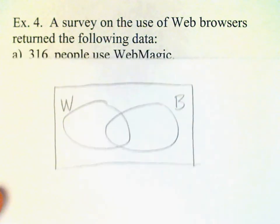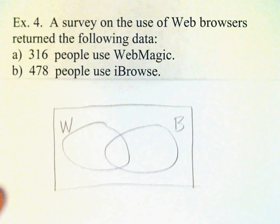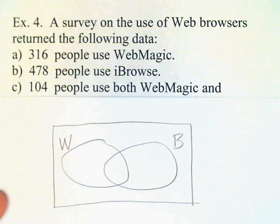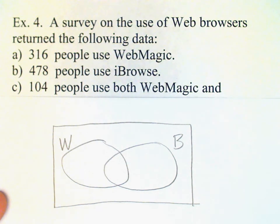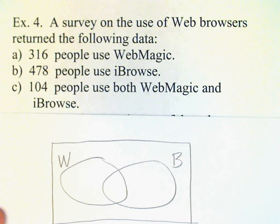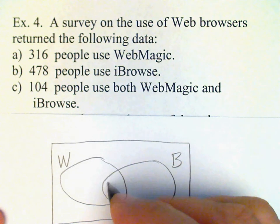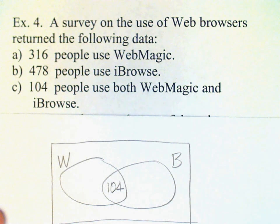Remember that when analyzing using a Venn diagram, we should start in the center of the diagram. That means item C in our problem — people who use both of these web browsers. That would be in the intersection of those two sets, so 104 goes in there.